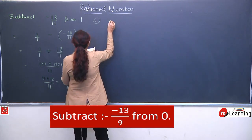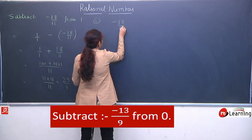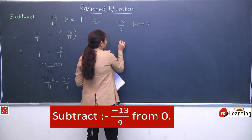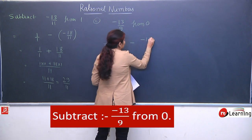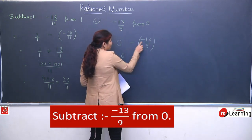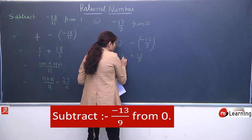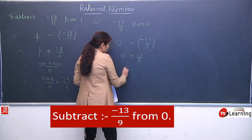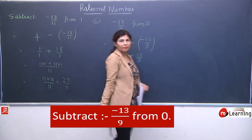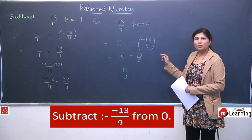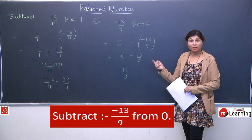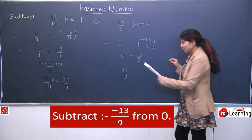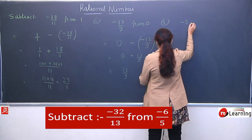Second question, same pattern: subtract minus 13 by 9 from 0. Again there is 'from', so we write 0 minus (minus 13 by 9). Minus minus is plus, giving plus 13 by 9. Since we are adding to 0, the answer is the number itself — 13 by 9. There is no need to put 1 in the denominator or take LCM. These types of questions appear in objective type questions, Maths Olympiad, or competitive exams.